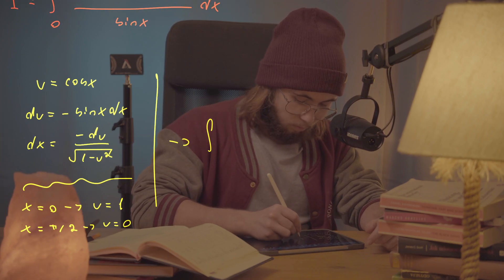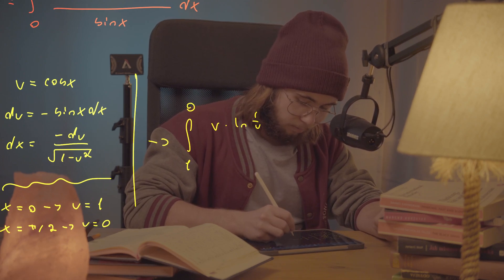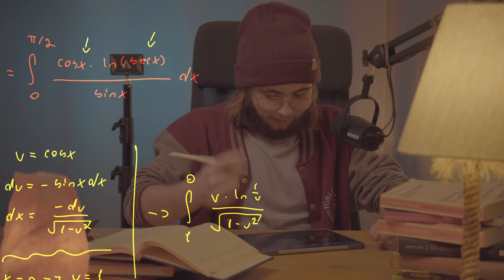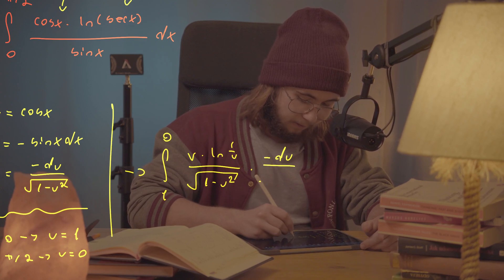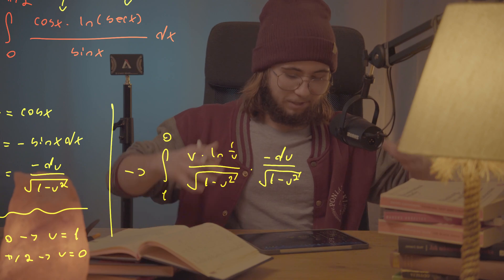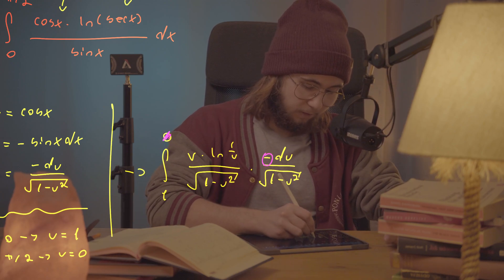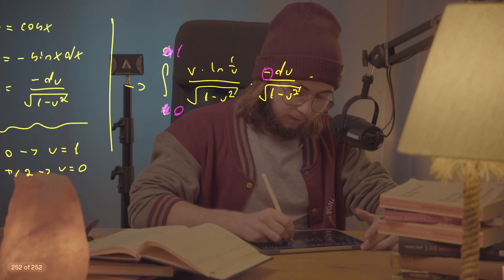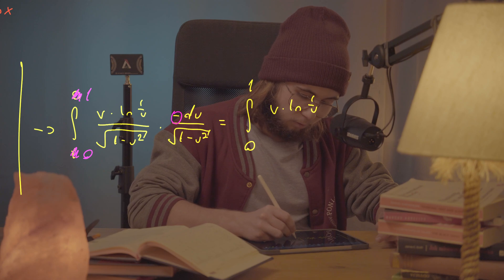This gives a new integral from 1 to 0 of u times ln(1/u), divided by √(1 − u²), times −du / √(1 − u²). The two square roots combine to give (1 − u²) without a square root, and the negative sign flips the bounds from 0 to 1. So the integral simplifies to the integral from 0 to 1 of u · ln(1/u) / (1 − u²) du.